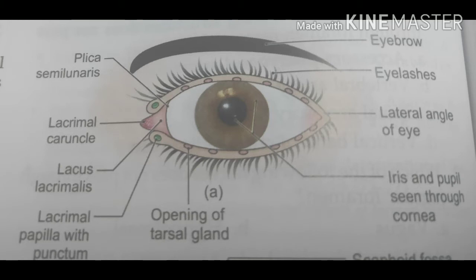Near the inner lip of the free edge there is a row of openings of the tarsal glands. The tarsal glands lie in the inner lip of the free edge. The free margin of both eyelids is subdivided into the lateral 5/6 — the ciliary part with eyelashes — and the medial 1/6 — the lacrimal part which lacks cilia.